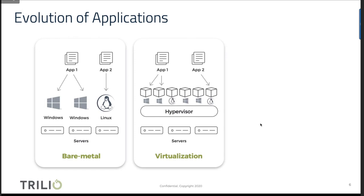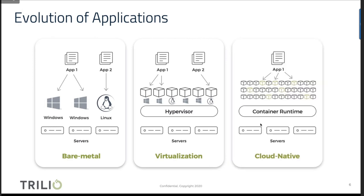When we moved into virtualization, we did not change the architecture of an application — they were still tightly integrated, running within the operating system boundary. What changed was the efficiency of the underlying hardware. Virtualization brought in efficiency of overall resources within the data center. Now, in a cloud native world, an application is broken down into multiple microservices — independent components that run within an environment with their own identity. To protect an application, all individual components need to be protected together: both the data portion and the metadata portion.